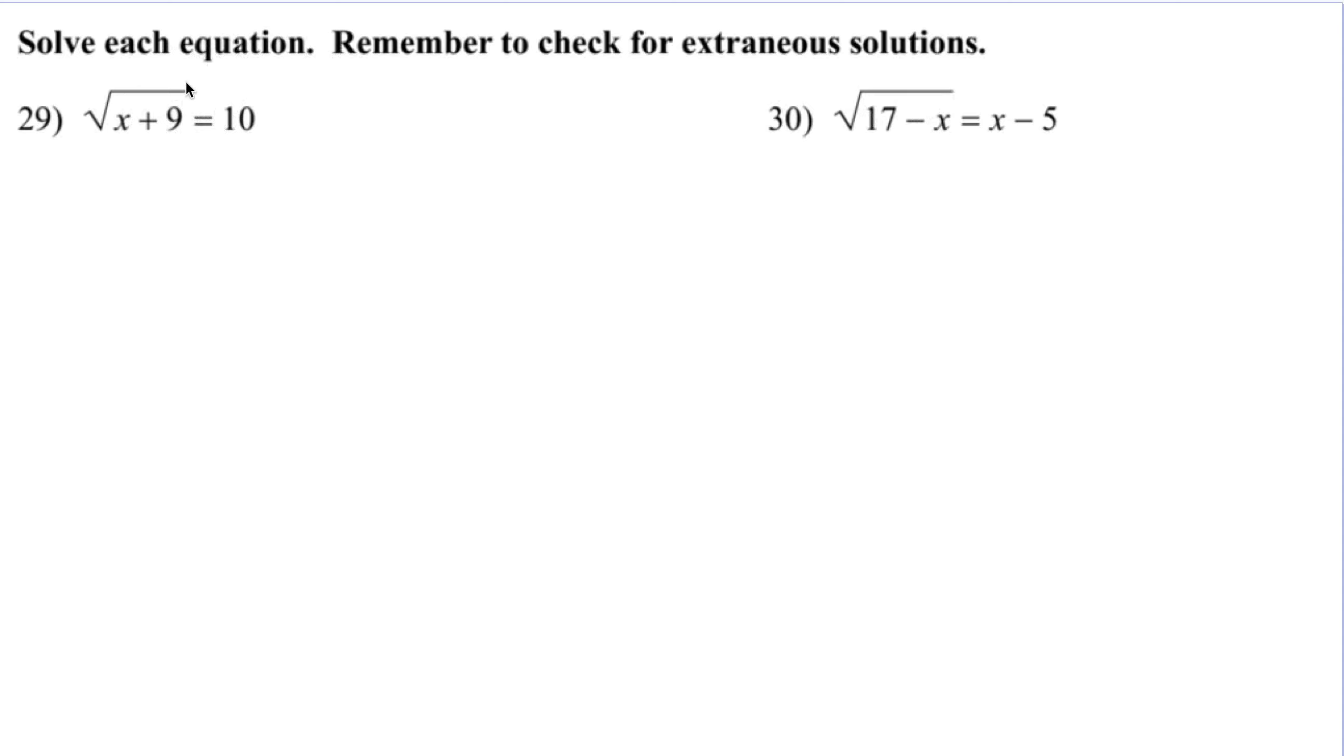If they weren't, if there was like a plus 7 outside here, we would want to subtract 7 first. But there's not. So just write this real quick. First, we start by isolating the radical.